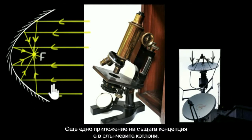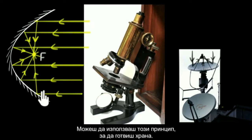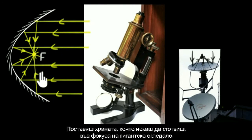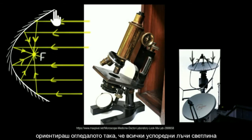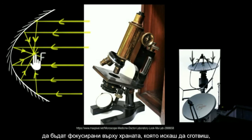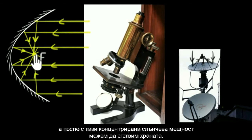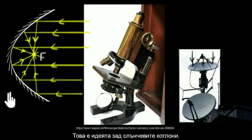One more application of this same concept is in solar cookers. We can use this principle to actually cook food. Whatever food you want to cook, you keep it at the focal point of a giant mirror. When the sun is at the right place — like noon when the sun is right above you — you orient the mirror so all the parallel rays of light are focused on the food. Using the concentrated power of the sun, we can cook the food. That's the idea behind solar cookers.